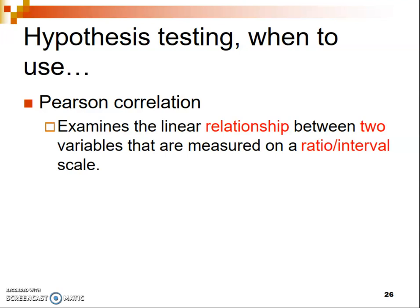There are other more advanced statistics that can be computed to look at other types of correlations, but we're just going to focus on the extent to which two variables form a straight-line or linear relationship. We're primarily focused on variables measured on an interval or ratio scale — basically, your variable involves numbers or is measured on a numerical scale.